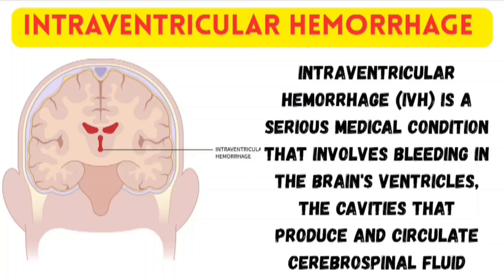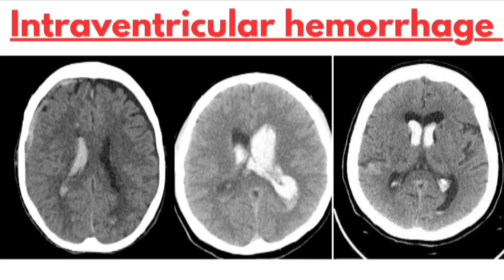Intraventricular hemorrhage (IVH) is a serious condition where bleeding occurs inside the brain's ventricles — fluid-filled spaces that produce and circulate cerebrospinal fluid. It can increase pressure inside the brain and lead to complications. It is most commonly seen in premature infants but can also occur in adults due to trauma or stroke. On CT scan, IVH appears as bright areas within the normally dark ventricles. The ventricles, which usually contain clear CSF, appear partially or completely filled with blood — a key indicator used to assess severity and location of the bleeding.